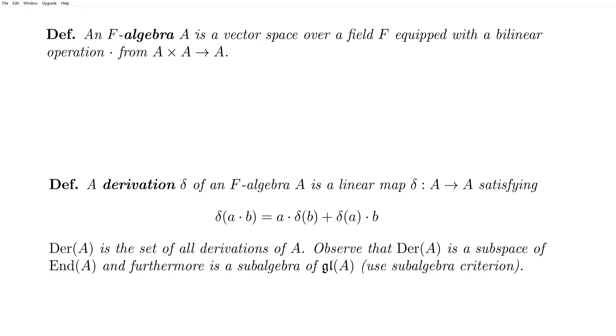An F-algebra A is a vector space over field F equipped with a bilinear operation dot from A cross A into A. So this dot doesn't have to be associative or commutative. There's no assumption on this.